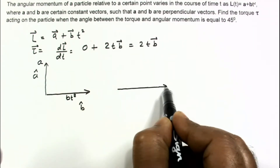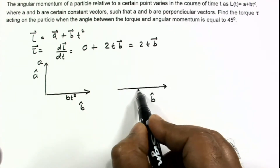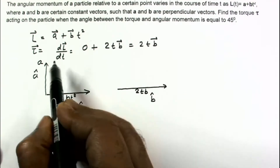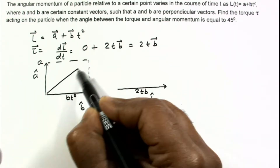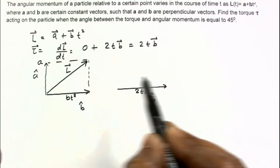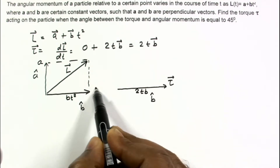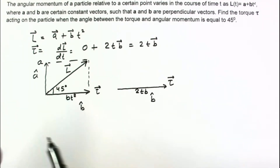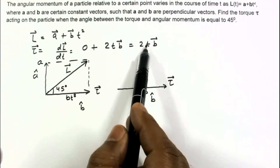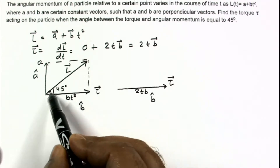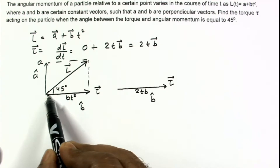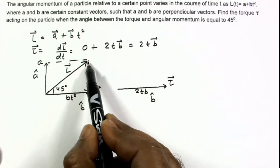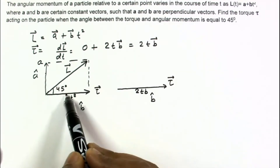Torque will be in the direction of b-hat, and at some time t its magnitude is 2tb. So this is the direction of the torque vector, and the direction of the angular momentum at a particular instant t is the resultant of the two perpendicular components. We are given that at some point in time this angle becomes 45 degrees. That means the component of angular momentum in the a direction and the bt² direction should be equal.